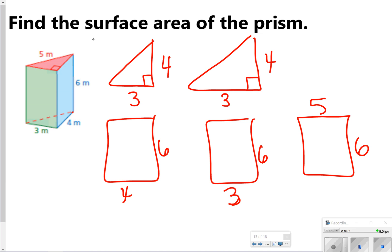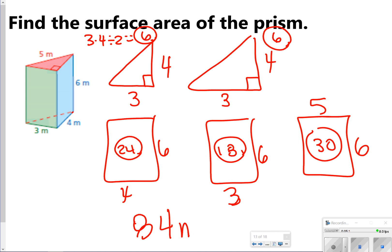Then I'm going to find the area of each one. 3 times 4 divided by 2 for triangles is going to give me 6, so this one will also be a 6, those are the same. A 4 by 6 is 24, a 3 by 6 is 18, and a 5 by 6 is 30. What I'm going to do now is just add all these together. I have 6 plus 6 plus 24 plus 18 plus 30, and I'm going to get 84 meters squared.